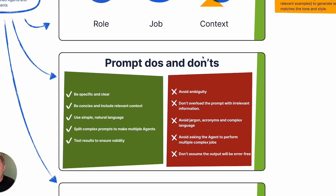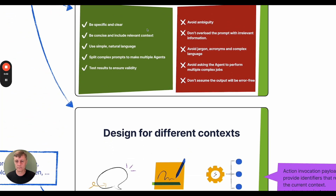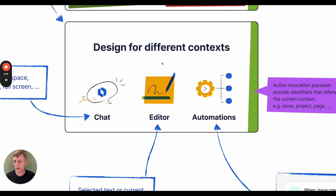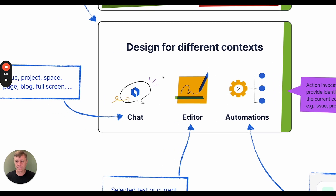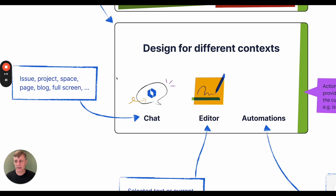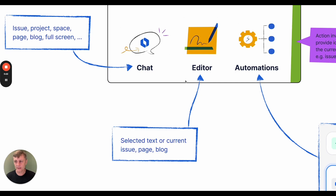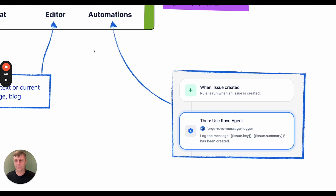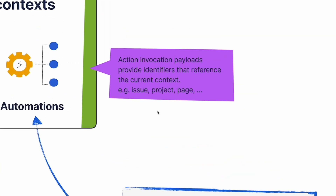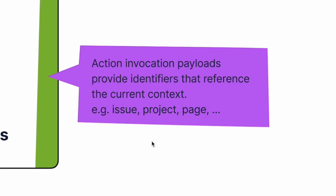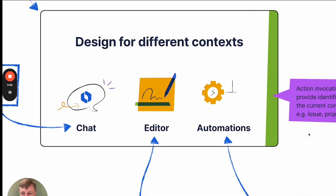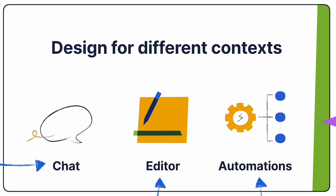Also, make sure you test your agent with a wide range of scenarios. Make sure you design your agent so that it can be used in different contexts, or at least it is clear what context it's supposed to be used in. When using the agent in a chat context, how does it behave when the user is viewing a Jira board versus a Jira work item? Does the agent work in the editor? What happens if the agent is included in an automation rule? When an agent's action is invoked, the payload provided to the action contains identifiers like an issue key, which can be used to work out what the current context is. Most importantly, you should test your agent in all these situations.